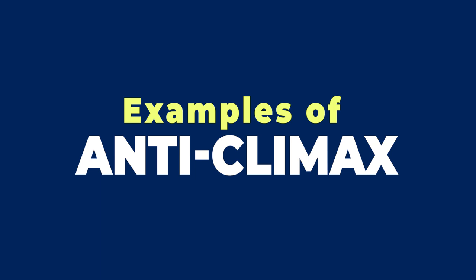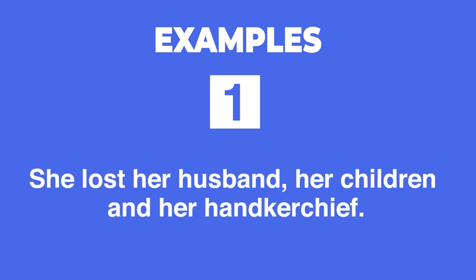Let us now look at a few examples of anticlimax. Example one: 'She lost her husband, her children, and her handkerchief.' Here, losing a husband and children are the most important and intensified losses, whereas losing a handkerchief is the most ludicrous thing. This sequence creates an effect of laughter — losing a husband is at the peak and there is a sudden fall from 'husband' to 'handkerchief.' This is the use of anticlimax in a sentence.